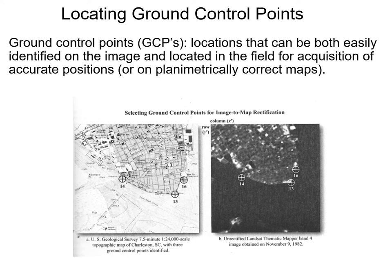We try to correct most of these using ground control points. Ground control points are locations that can be both easily identified on the image and located in the field for accurate positions — or on orthorectified maps or images. This has become very easy. When I started in remote sensing, you'd take out a USGS 7.5-minute topographic sheet, tape it to a digitizing board, and manually digitize street intersections. Now you can just put up two windows — unrectified image on the left, rectified image on the right — and click back and forth.